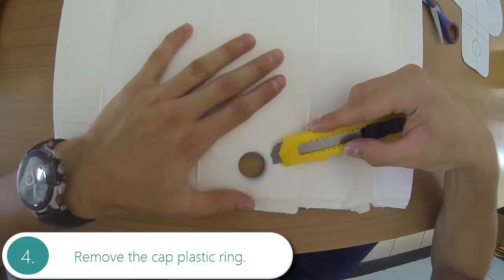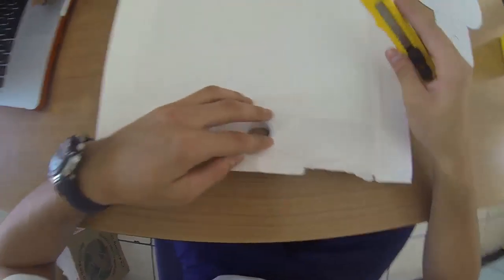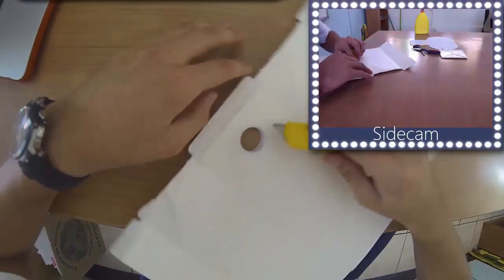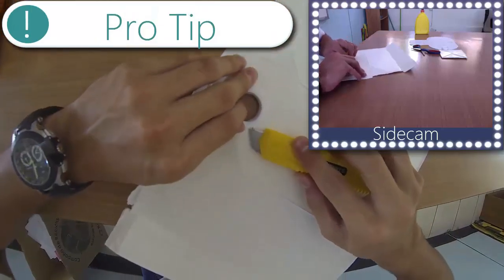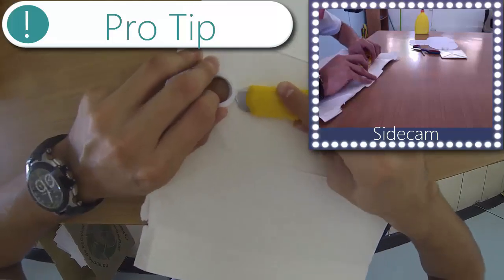On this step, you want to remove the plastic ring where the cap goes. Pro tip: you can use a knife if you're having a hard time pulling it out with your fingers.